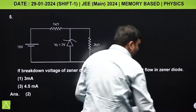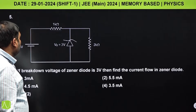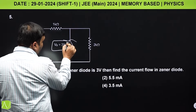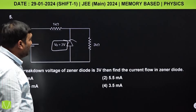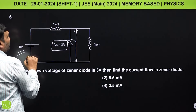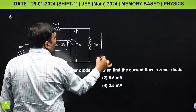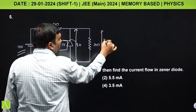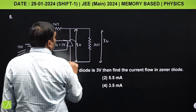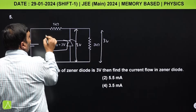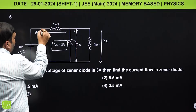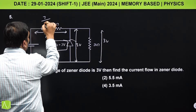Question 5 is on a Zener diode, which appears in every exam. If the breakdown voltage of the Zener diode is 3 volts and the supply is 10 volts, the diode will break down and maintain a constant 3 volts across it. The remaining 7 volts appear across the series resistor of 1 kΩ. Find the current through the Zener diode.